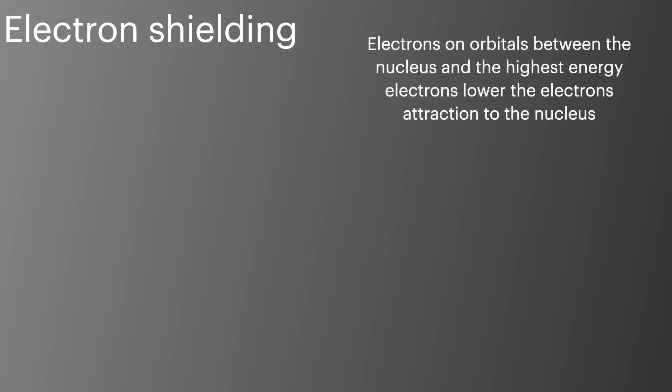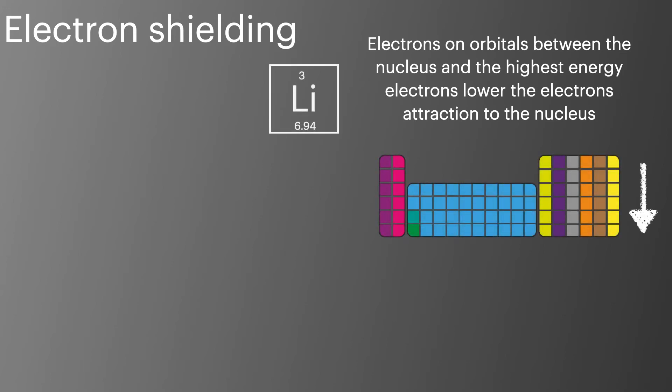Electron shielding happens when there are electrons in orbitals between the outermost or highest energy electron and the nucleus. This weakens their attraction to the nucleus and makes them easier to remove. This increases the most as we go down the periodic table as each row adds a new energy level.